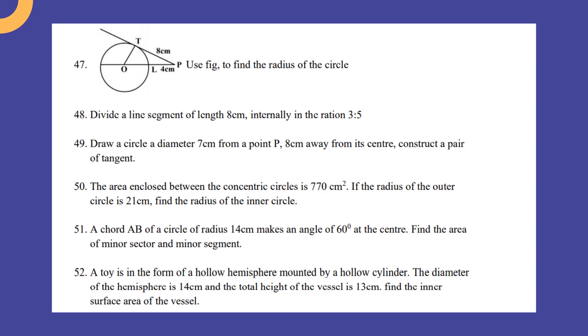A chord AB of a circle of radius 14 centimeter makes an angle of 60° at the center. Find the area of the minor sector and also the minor segment.